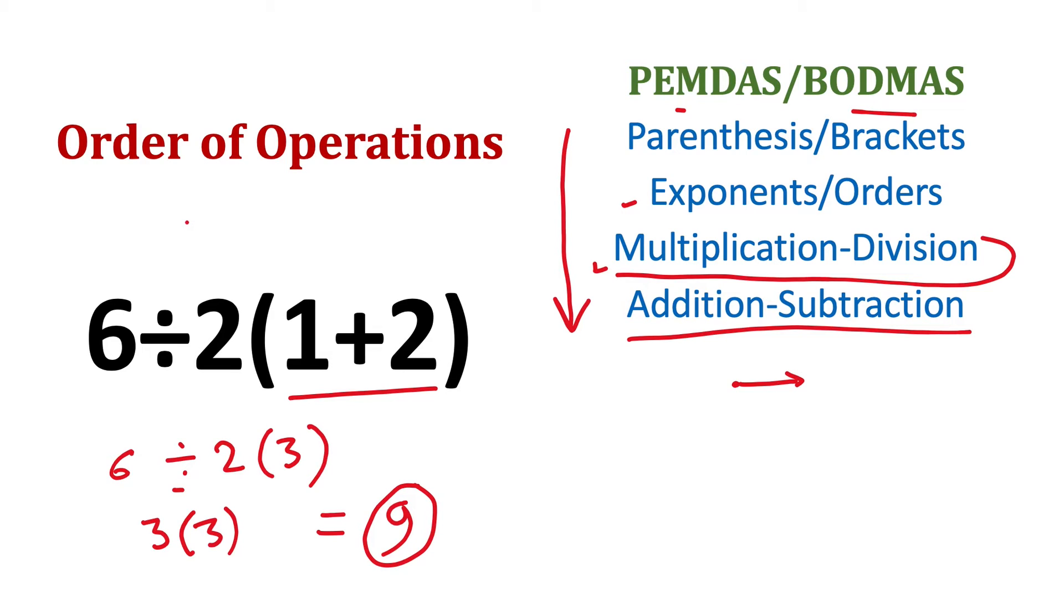But where did this ambiguity come from? Why the other way? Some people may think, write it as this and then solve this part first. Then we will get 6 divided by 6, or 1. So this is the wrong answer.